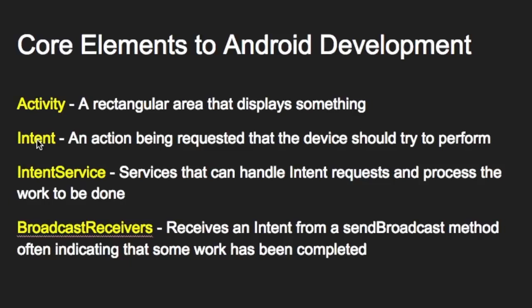An intent is like a translator — translating that user interaction, a tap or a swipe, into something we want the Android device to perform. Think of it as a mediator that says here's what we want done, what is out there on the device that could do it for us. That's where intent services and broadcast receivers come in. An intent service is something that might be able to perform the task the intent is requesting, and it can work on it in the background if necessary.